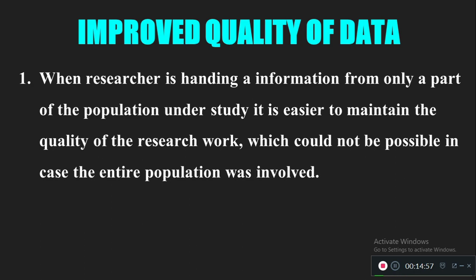The second purpose is improved quality of data. Collecting data from the entire population is very hectic for the researcher to maintain quality. When we collect data from an adequate sample, the information is more accurate and more precise. For example, a farmer with 1,000 cows cannot maintain the quality of all of them, but with fewer cows proportional to available space and workers, quality is maintained. Similarly, sampling improves data quality and accuracy.